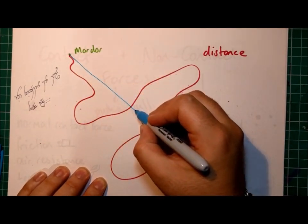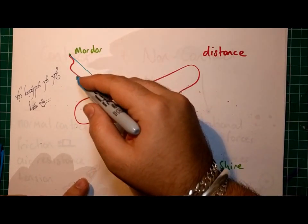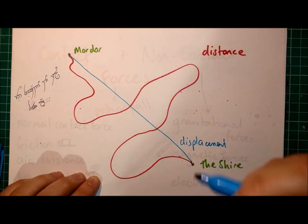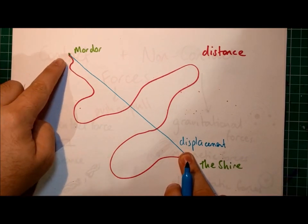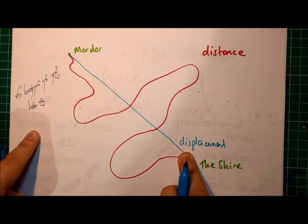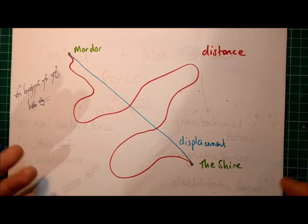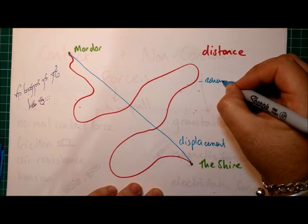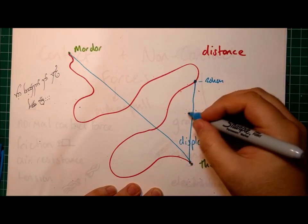And at different points in this journey, actually their displacement doesn't increase at all. Sometimes it does and sometimes it doesn't. So the simplest displacement would simply be from the beginning to the end of their journey. So from Mordor to the Shire, it should be a straight line. That distance there, which you can see is appreciably shorter than the distance, that is the displacement.